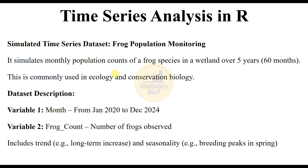The dataset has two variables. Variable 1 is the month, from January 2020 to December 2024. Variable 2 is the frog count — the number of frogs observed. The dataset includes a trend, for example a long-term increase, and seasonality, for example breeding peaks in spring.